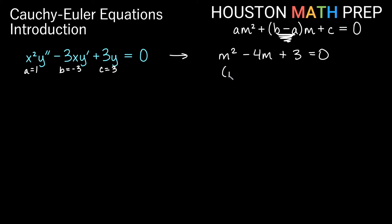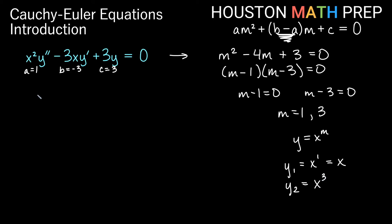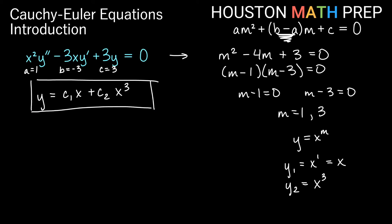This factors as m minus 1 times m minus 3 equals zero. Setting each factor equal to zero gives m equals 1 and m equals 3. Remember our solutions are of the form y equals x to the m. So y1 is x to the 1, which is just x, and y2 is x to the 3, or x cubed. Our general solution is c1 times x plus c2 times x cubed. Instead of getting exponentials based on m values, we're getting polynomial terms.